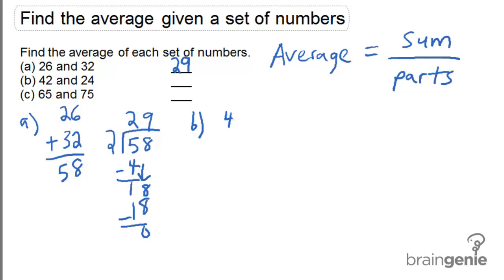For example B, the sum of 42 and 24 is 66. Again there are two parts, so when we divide 66 by 2, we get an average of 33.